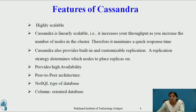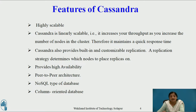Cassandra has a peer-to-peer architecture. That means it does not have a master-slave architecture. All the nodes in Cassandra are connected in a ring or a cluster and they are interconnected with each other. All the nodes are independent of each other — they have defined roles, and all nodes play the same role. Every node can handle read requests or write requests irrespective of whether the data is stored on that node or not.